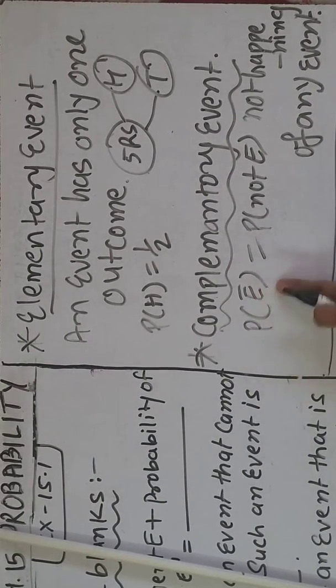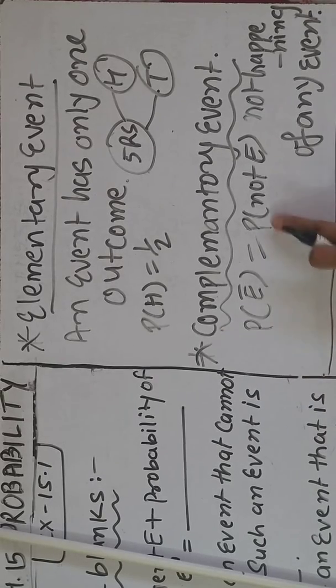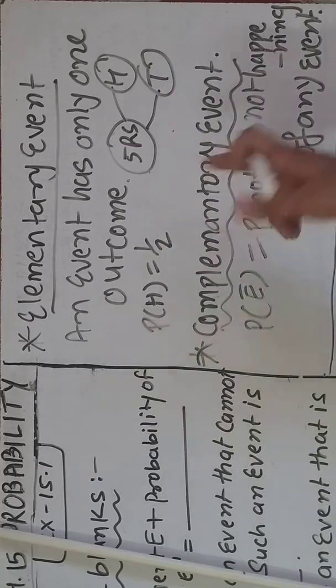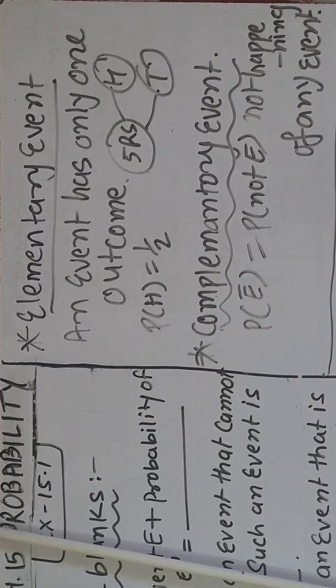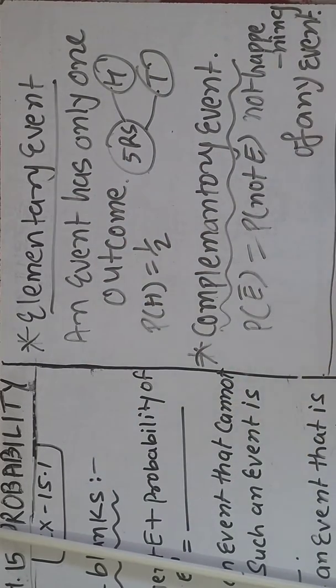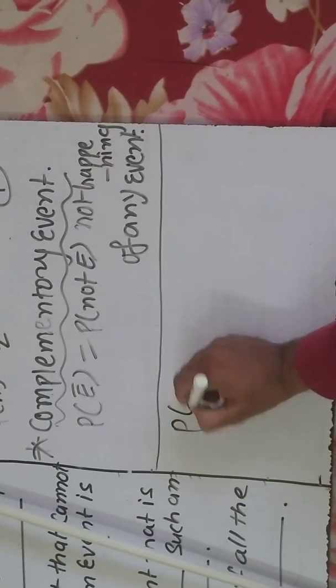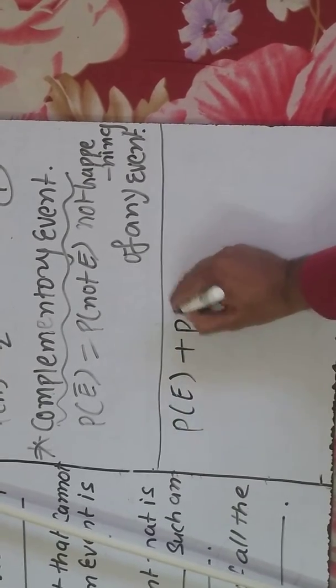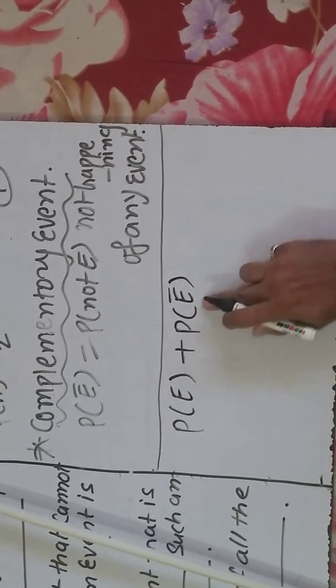Isko denote karenge P(E bar), that means P not E. That means head aane ki probability 1 by 2 hai. Toh probability of event E plus probability of event E bar that is always 1 — yeh yaad rakhna.